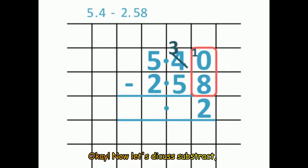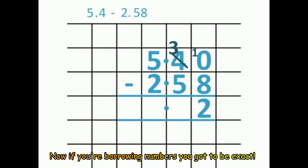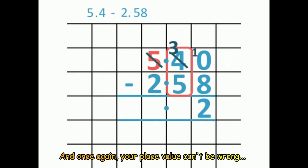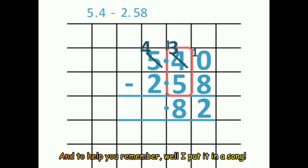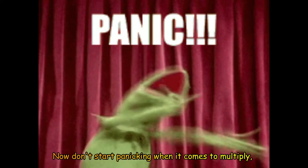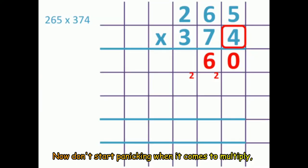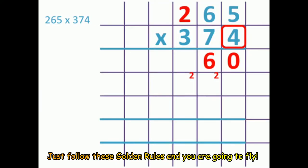Now let's just start subtract. Now if you're borrowing numbers, you've gotta be exact. And once again, your place value can't be wrong. To help you remember, well I put it in a song.